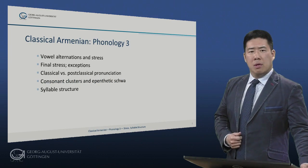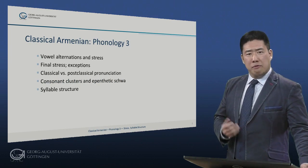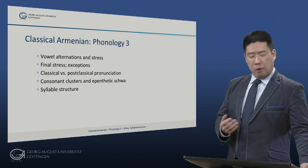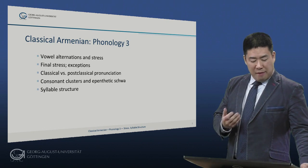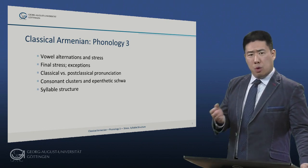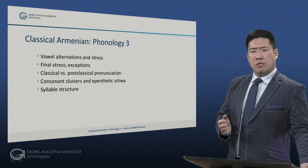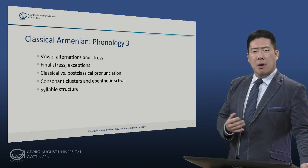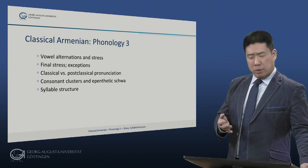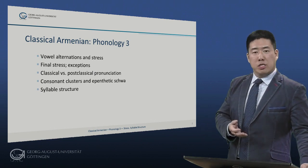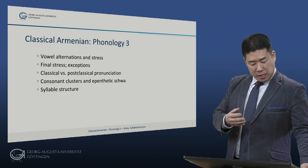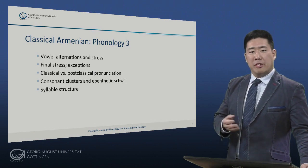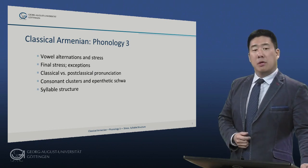Here's a roadmap of this module. First we will return to vowel alternations from the previous module and their consequences for the position of stress in classical Armenian. We will look at the evidence for final stress and exceptions to word-final stress. We will then turn to some of the differences between classical and post-classical pronunciation, which are important for the history of Armenian and the pronunciation, traditional and scholarly, of classical Armenian. We will then examine consonant clusters and the evidence for epenthetic schwa and then conclude with a consideration of syllable structure in classical Armenian.